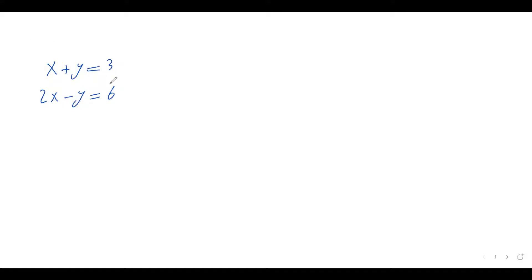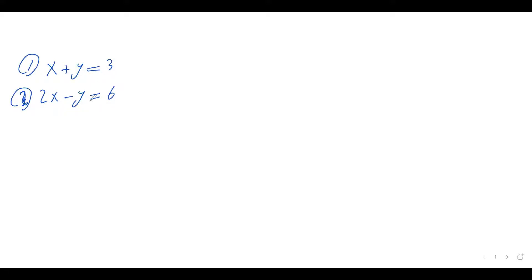This is a linear system and as you can see it has two linear equations — equation one and equation two. When we try to solve this linear system, what we are doing basically is finding the point of intersection between these two lines.